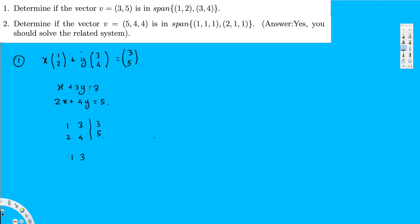To eliminate the first column entry in row 2, I multiply row 1 by negative 2 and add it to row 2. So -2R1 + R2 gives 0 in the first position. Negative 2 times 3 plus 4 is negative 2, and negative 2 times 3 plus 5 is negative 1. Then I simplify by dividing row 2 by negative 2, giving [1, 3 | 3] and [0, 1 | 1/2].